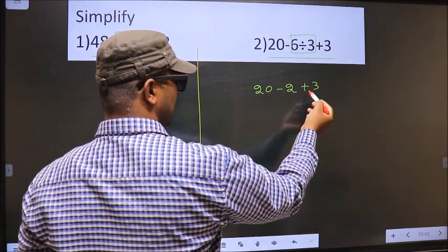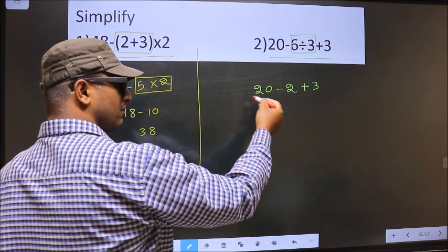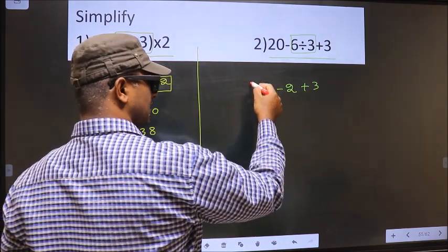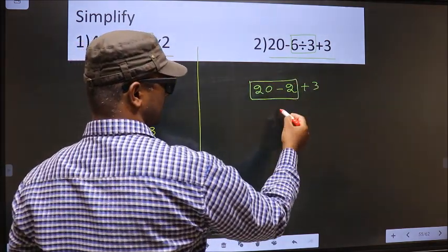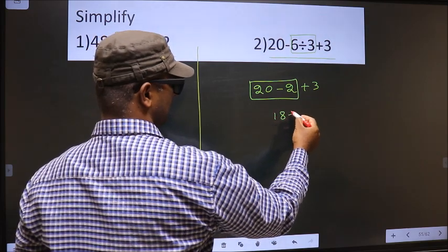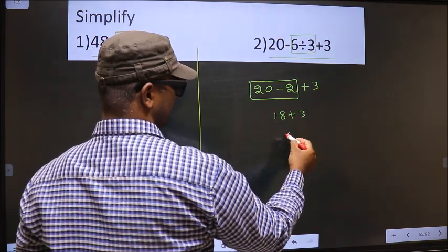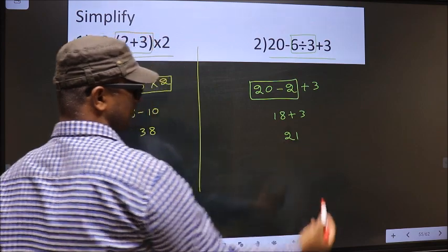Now when we have subtraction and addition, we start from the left side. So that is 20 minus 2, 18 plus 3. 18 plus 3 is 21. This is our answer.